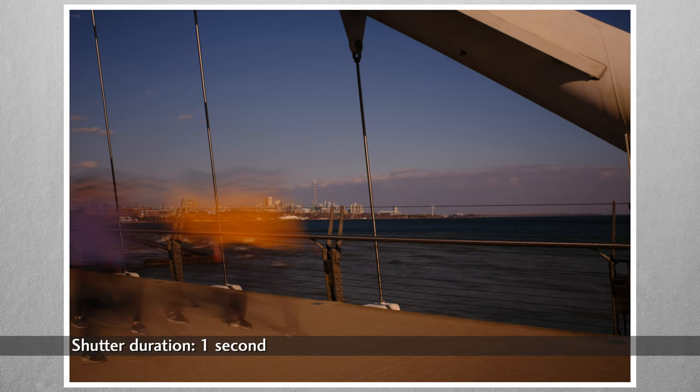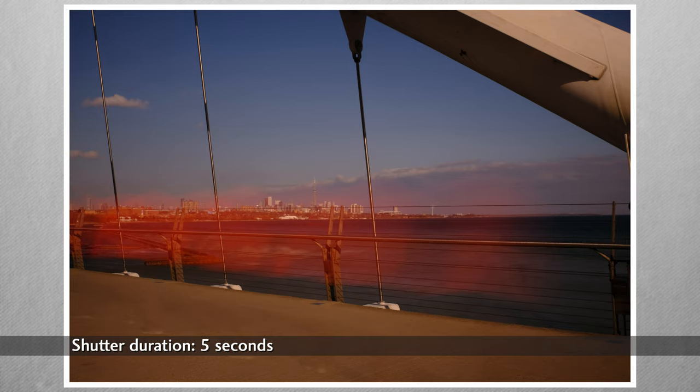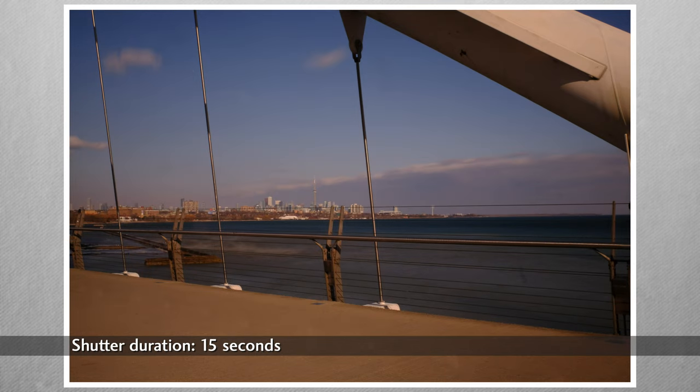As we increase shutter durations further, at some point the iris cannot close further and the ISO cannot go lower. To achieve a longer duration, a neutral density filter is needed — ND filters cut the amount of light and keep your longer shutter duration images from overexposing. But eventually, as the shutter duration gets longer, the moving pedestrians disappear completely from the image; they're not in one spot long enough to register, even as a blur. Remember that the next time you're at a busy tourist spot.